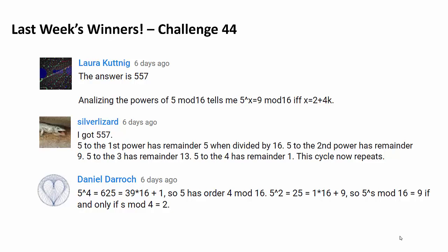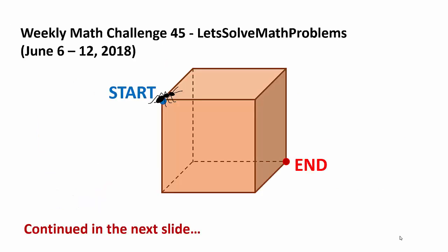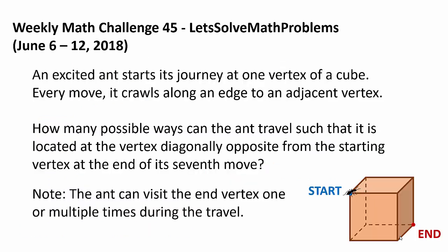Now let's get to this week's challenge. We have this beautiful diagram given to us. The question is: an excited ant starts its journey at one vertex of a cube. Every move, it crawls along an edge to an adjacent vertex. How many possible ways can the ant travel such that it is located at the vertex diagonally opposite from the starting vertex at the end of its 7th move?